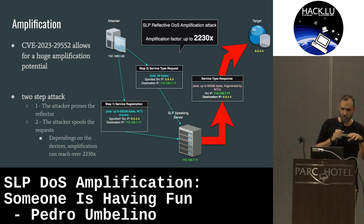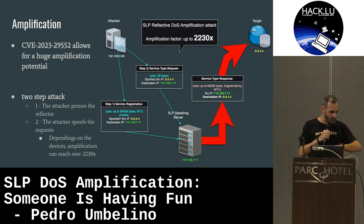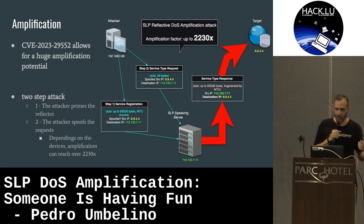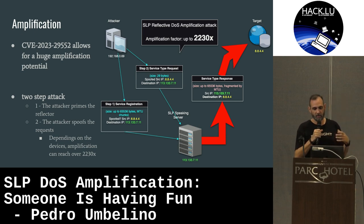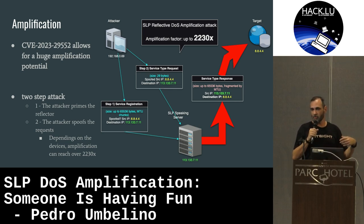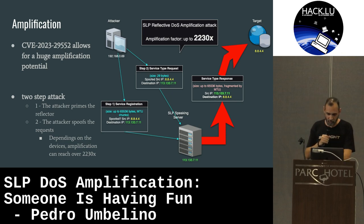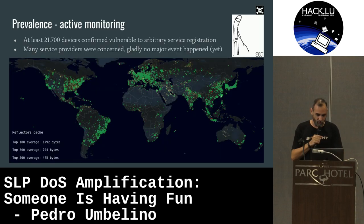This particular attack is a two-step attack. The first step is where the attacker primes the server — fills its cache, its memory. After that, the attacker spoofs their IP address with the IP address of the target victim, and the vulnerable server replies with a large answer. We are talking about a 29-byte packet that can generate up to 65K packets — almost the maximum available for a UDP packet.